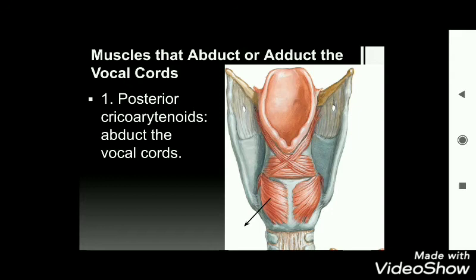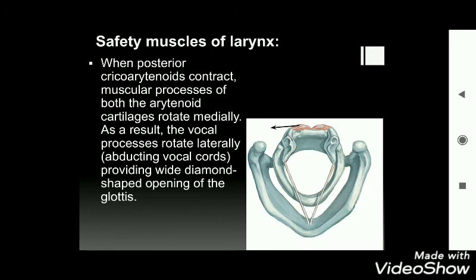Muscles that abduct and adduct the vocal cords: the posterior cricoarytenoid is a very important muscle responsible for abduction of the vocal cords. It is called the safety muscle of the larynx. It originates from the laminae of the cricoid cartilage, extends upward and laterally to the muscular process of the arytenoid cartilage. When it contracts, the vocal process rotates laterally — abducting the vocal cords — providing a wide, diamond-shaped opening of the glottis.